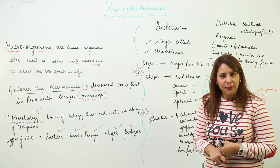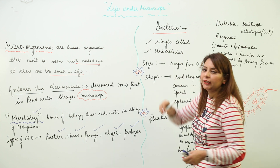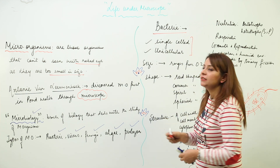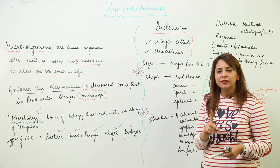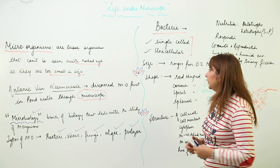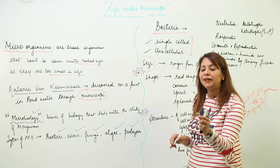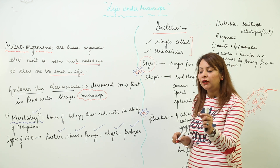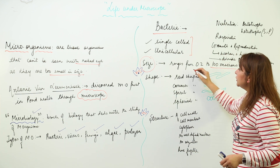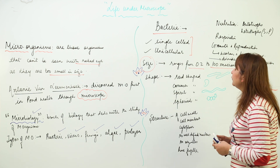Starting with the detailed study of bacteria: a bacterium is formed of a single cell, meaning it is unicellular — one cell performs all the functions in its body. Regarding size, the size of bacteria ranges from 0.2 microns to 100 microns, from very small to relatively large.